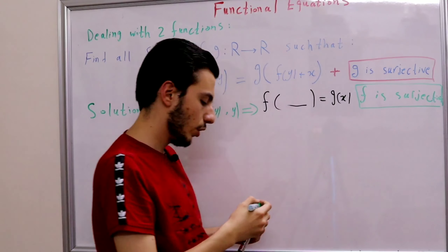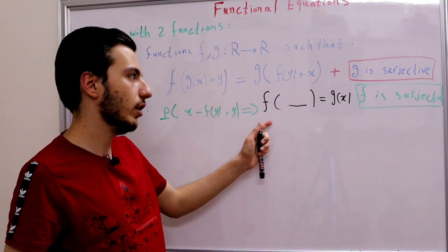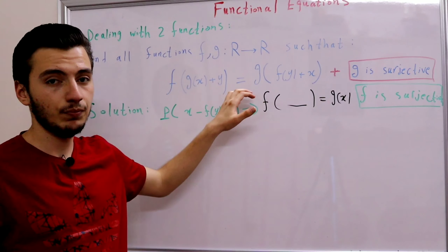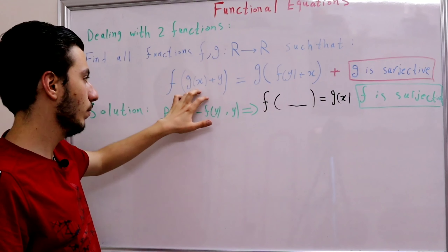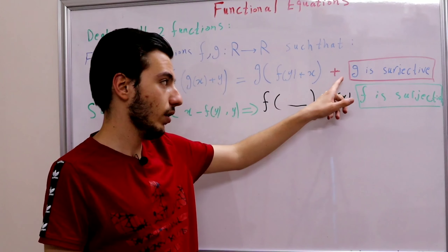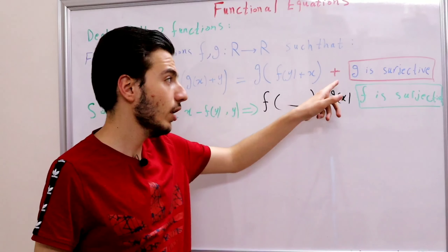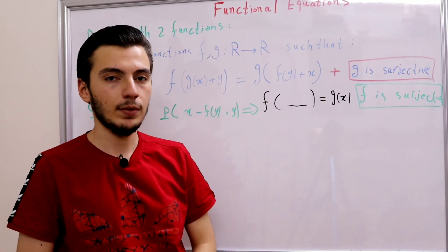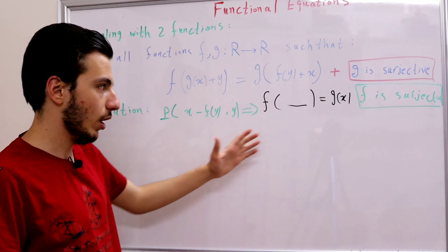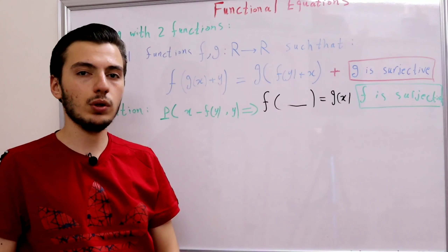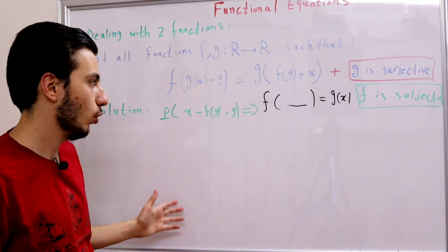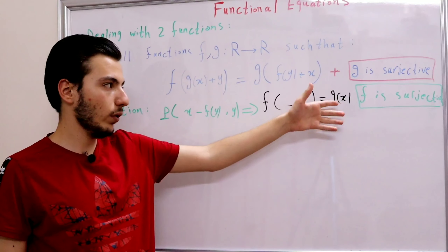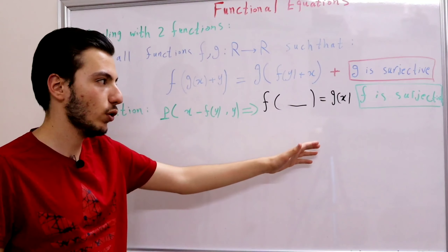We now have a nice symmetry: the functional equation is symmetrical, and both g and f are surjective. This means whatever we do on f we can also do on g.